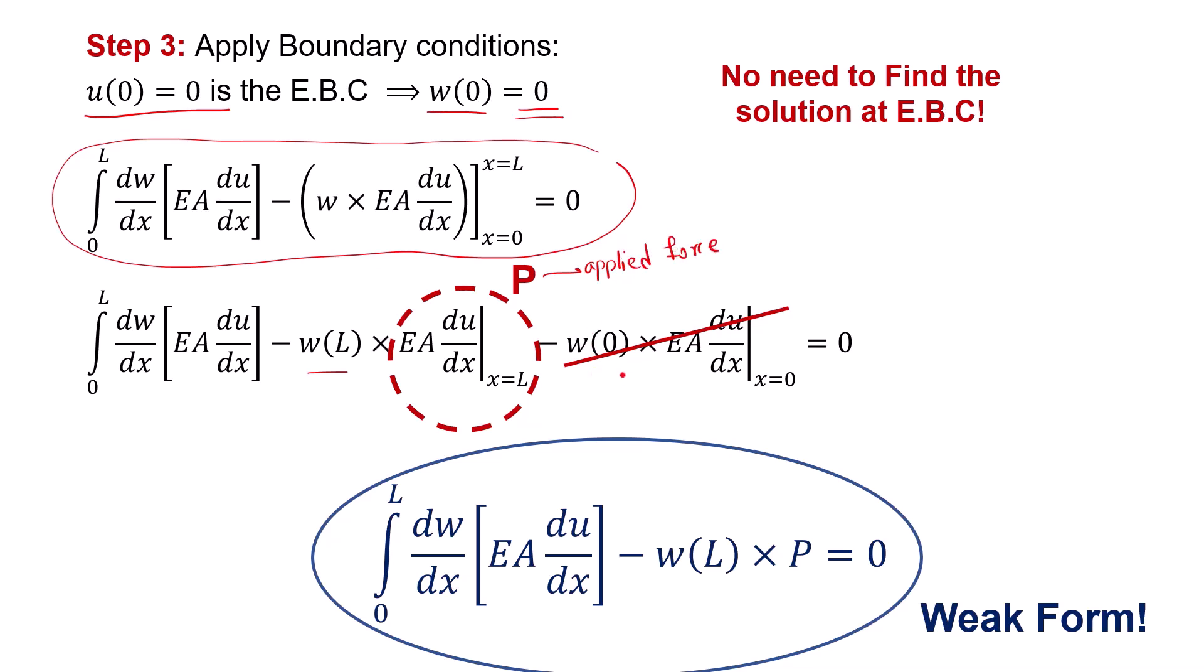At x equal to 0, we also get a term w(0) times EA du/dx at x equal to 0. We don't know the value of this term, but we do know that w(0) is 0. So this whole term cancels out. When we apply these conditions to the result of the integration by parts, we arrive at the final weak form shown here.